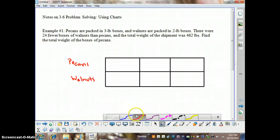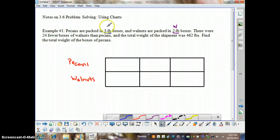And we have some information related to each of these. It says pecans come in three-pound boxes and the walnuts come in two-pound boxes. So let's put a W above this and a P above this so we know those go with the walnuts and the pecans.